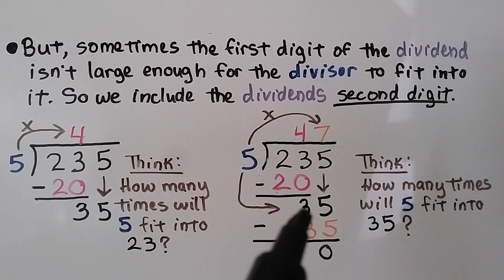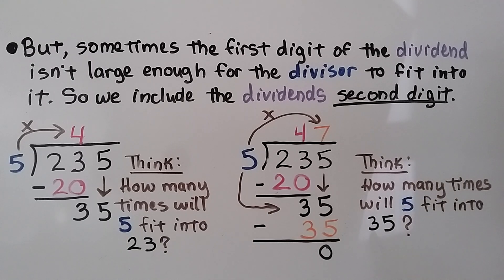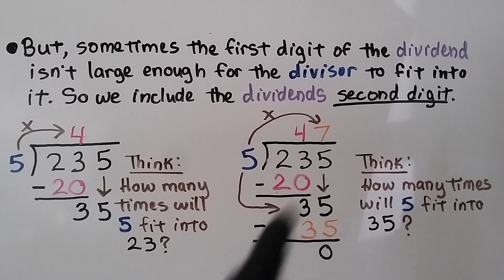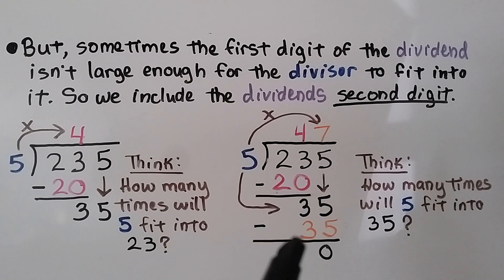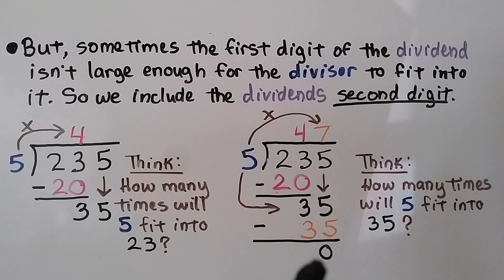Now that the five dropped down, we ask ourselves: how many times can this five fit into thirty-five? We know that five times seven is thirty-five, so it'll fit in seven times. We write a seven up there, do five times seven which is thirty-five, subtract and get zero. We know the quotient is forty-seven.